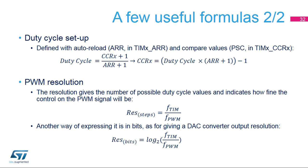Another useful indication is the PWM resolution. This gives the number of possible duty cycle values and indicates how fine the control on the PWM signal will be. The resolution, expressed in number of duty cycle steps, is simply equal to the ratio between the timer clock frequency and the PWM frequency, the whole minus 1. Alternatively, expressed in bits, the resolution is the base 2 logarithm of that ratio minus 1.